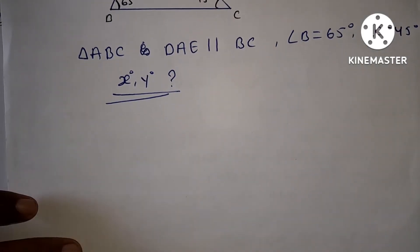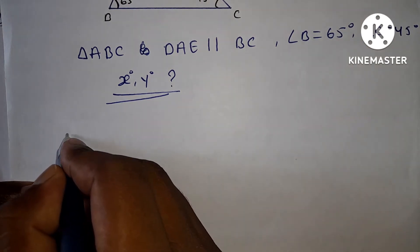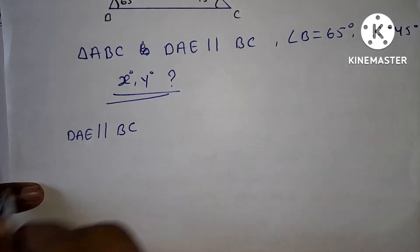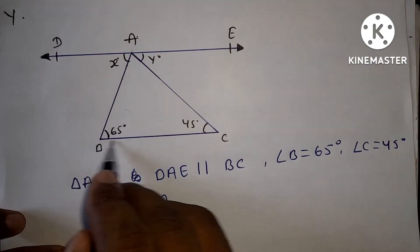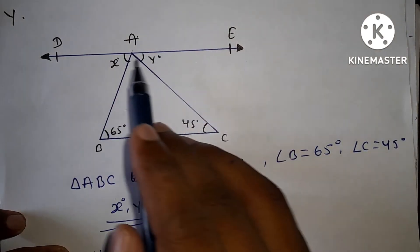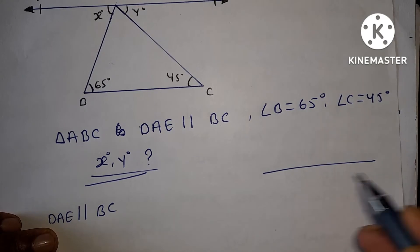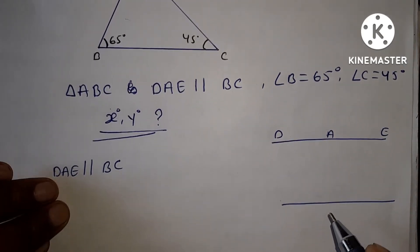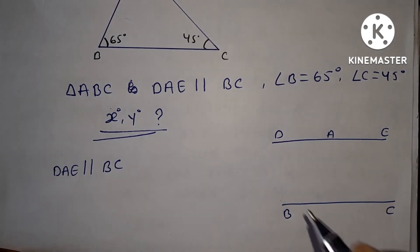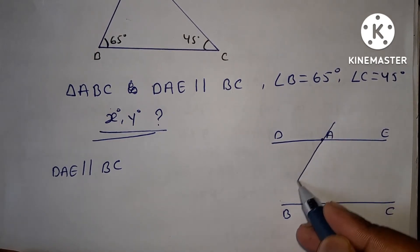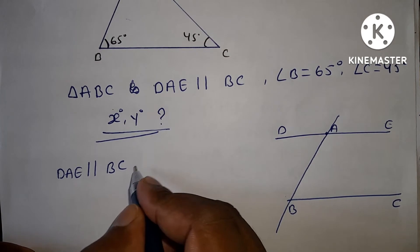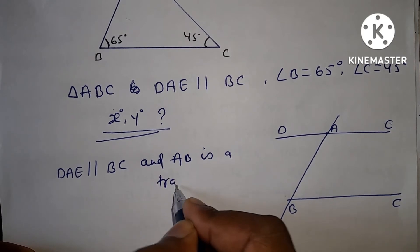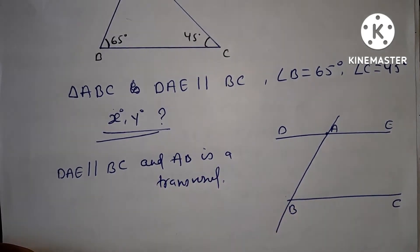तो आपका यहाँ दिया है कि DAE जो है parallel to BC है। यह देखो जो आपका BC line है और DAE जो line है ये parallel है। और आपका AB जो है — AB is a transversal.